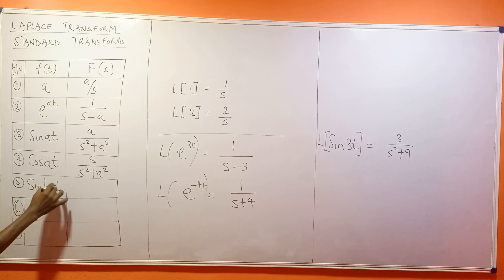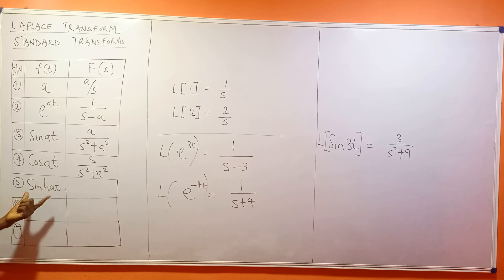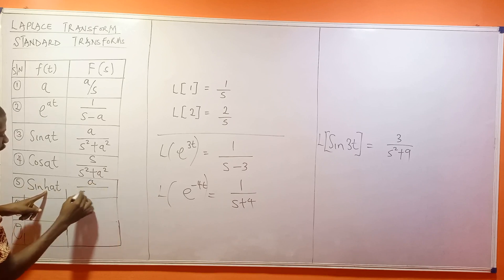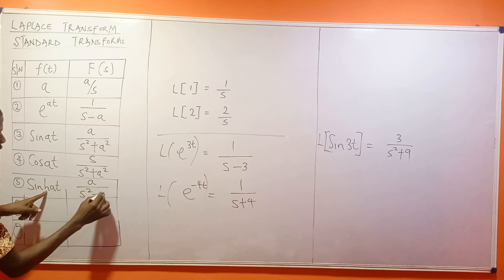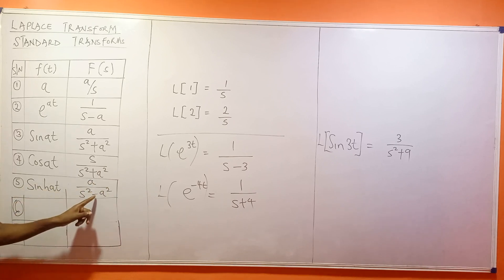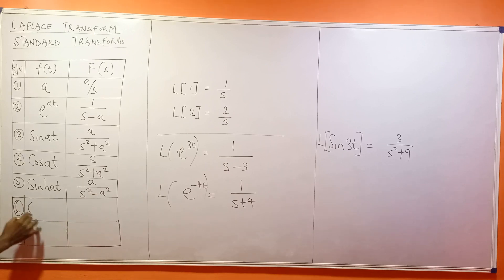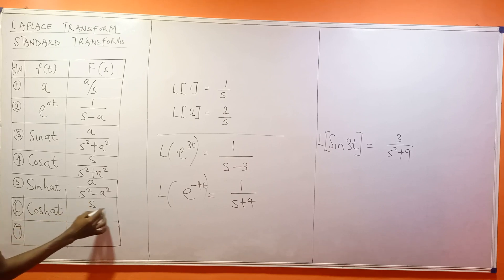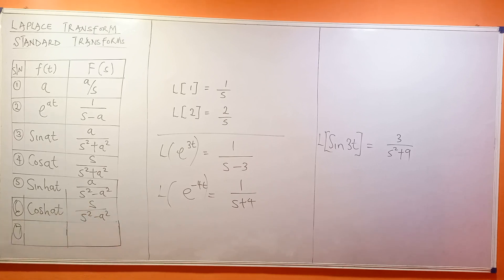The next one is sinh(AT) — it's like sine but this is the hyperbolic version. This will become A over S squared minus A squared. And cosh(AT) is S over S squared minus A squared. This one has a minus sign in the denominator.